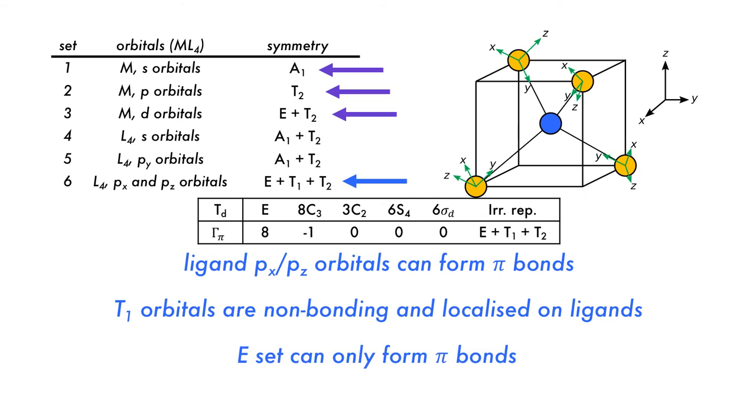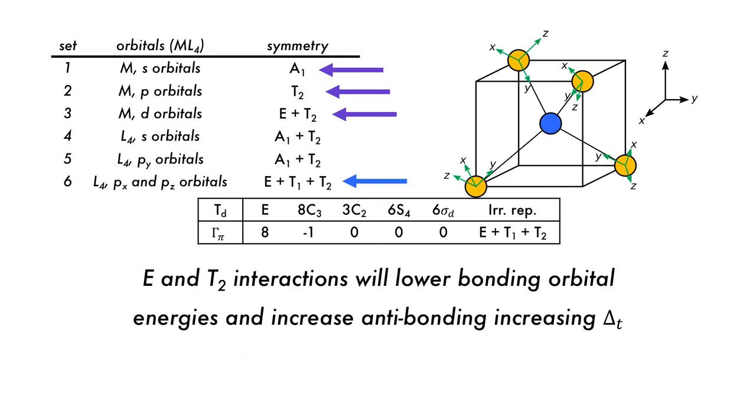The E set, which is sigma non-bonding, can only form pi bonds, but the case for the T2 set is more complicated as the T2 set can engage in sigma bonding with the py ligand orbital and or pi bonding with either of the px or pz orbitals. The end result of pi bonding in the tetrahedral geometry is the increase of delta T as E and T2 pi bonding interactions lower the energies of the bonding orbitals and increase those of the antibonding orbitals.